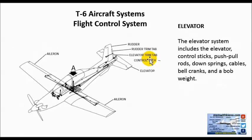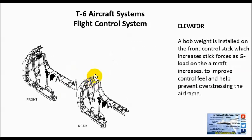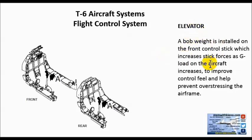The elevator system includes the elevator, control sticks, push-pull rods, down springs, cables, bell cranks, and a bob weight. We want you to understand that the control sticks operate the elevator system. The bob weight is installed on the front control stick, which increases the stick forces as G load on the aircraft increases. It helps improve control feel and helps prevent overstressing the airframe, so it kind of balances so that you don't go crazy with the control inputs.